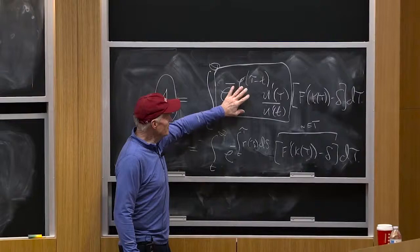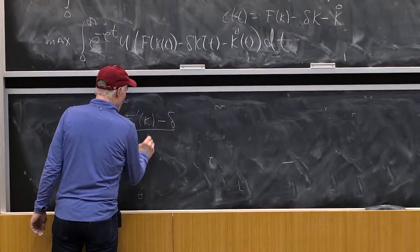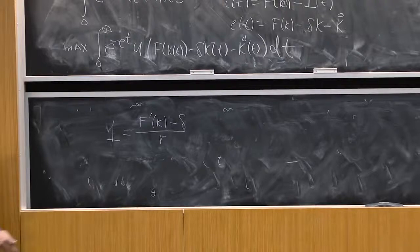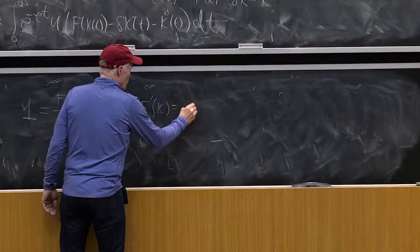This is just going to be a constant. So our steady state is going to be f prime of k minus delta over r equals 1. That's going to be our steady state. I'm sorry, over rho.